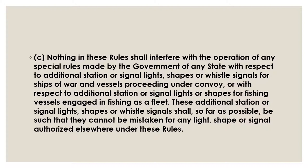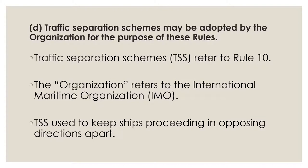Rule Number One D is about traffic separation schemes that may be adopted by the organization for the purpose of these rules. Traffic separation schemes are defined in Rule Number 10 of the international rules, and the organization in this case is the International Maritime Organization, or IMO, which is a body of the United Nations. Traffic separation schemes are used to keep apart ships proceeding in opposite directions in well-traveled sea lanes and are most commonly found in the coastal approaches to busy ports around the world.